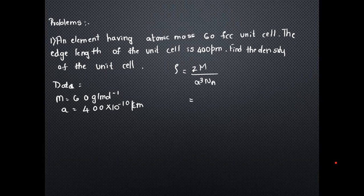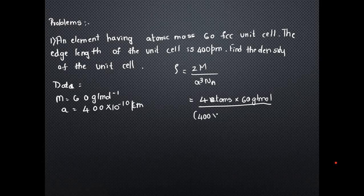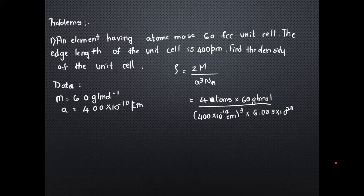For an FCC unit cell, the number of atoms per unit cell is 4, so Z = 4. Substituting: density = 4 × 60 g/mol divided by (400 × 10⁻¹⁰ cm)³ × 6.023 × 10²³ atoms per mole.